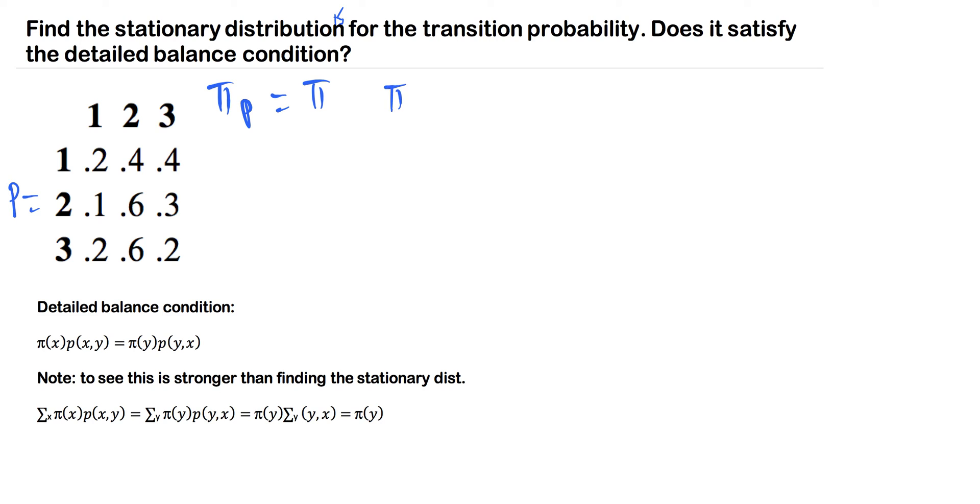So where π is a probability vector that needs to be a one by three, because we're working with a three by three, and I'm going to kind of go over this quickly because the detailed balance condition really is the main point of this video.